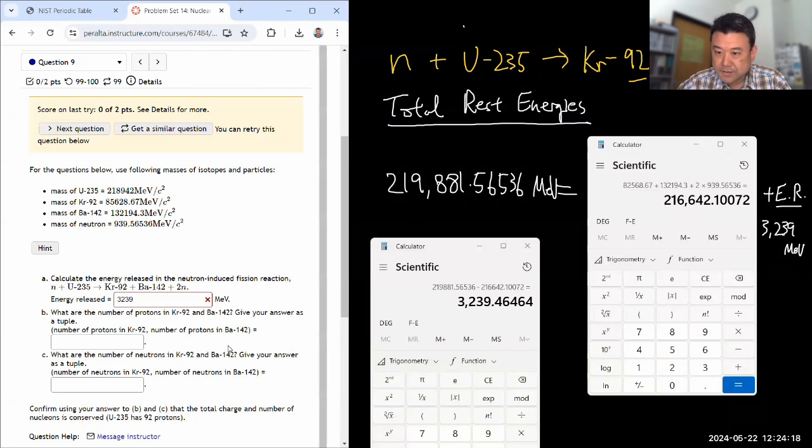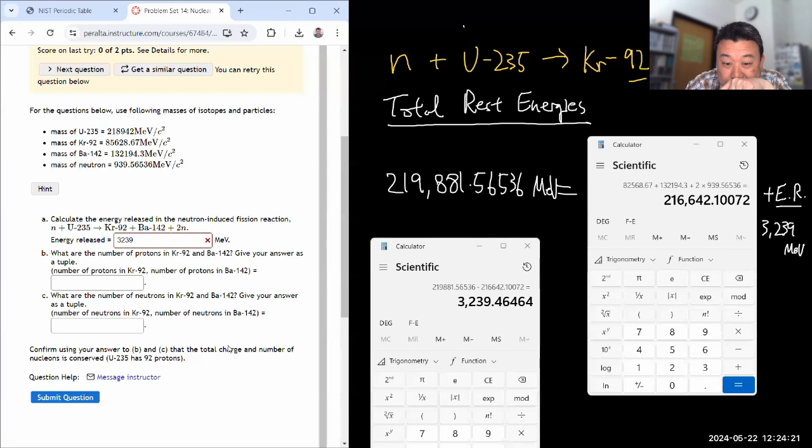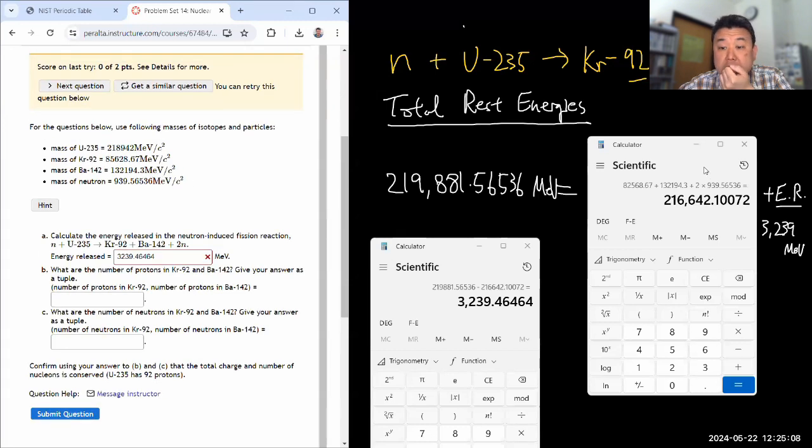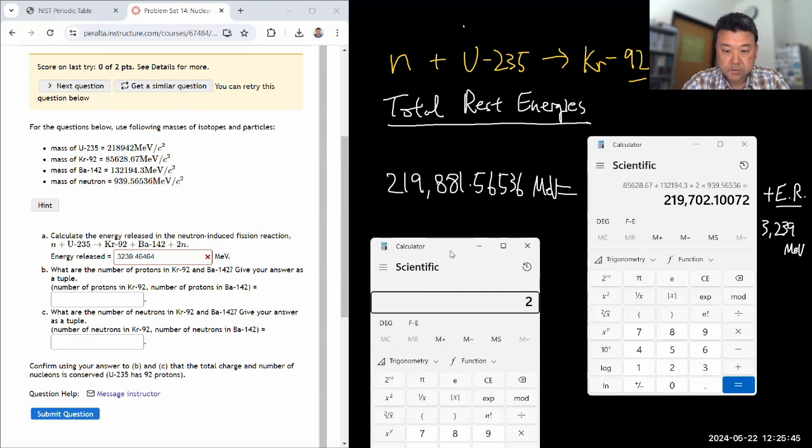Oh, I made a typo there. Okay. So let me do it this way. I'm going to just retype in everything here so that it makes easier to edit. Okay. So with that typo corrected, now the difference should be 219881.56536 minus 219702.10072. Let's see. Okay. It's still fairly large, 179 MeV.